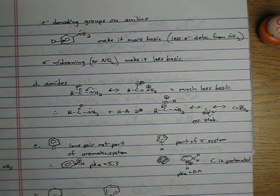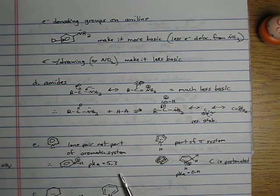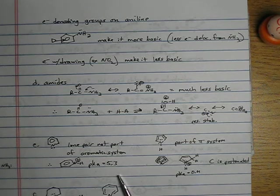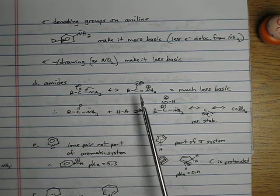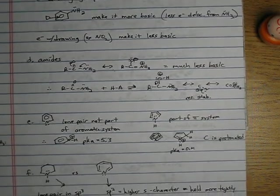Amides, note, amides are less basic than amines due to this resonance right here. So amides are much less basic than amines because they are resonance stabilized. And if you protonate it, you lose this resonance and stabilization.